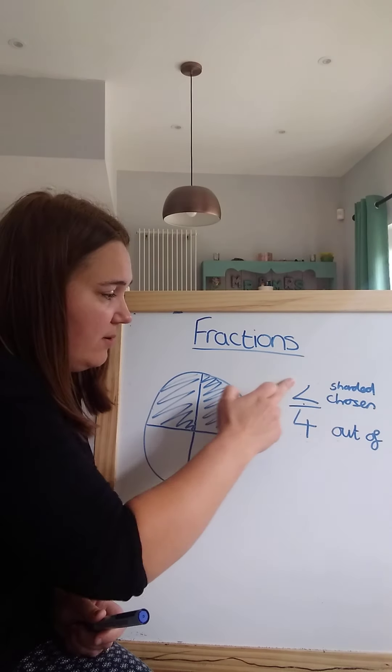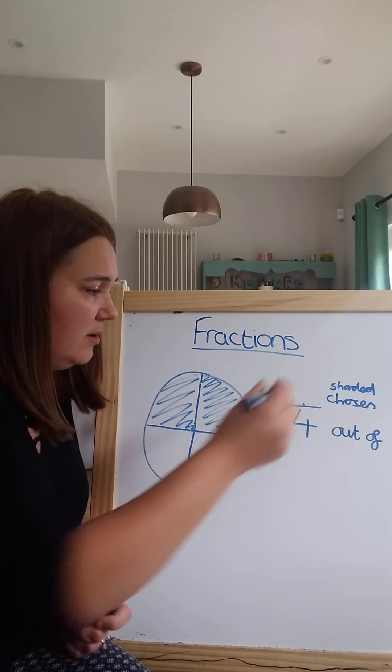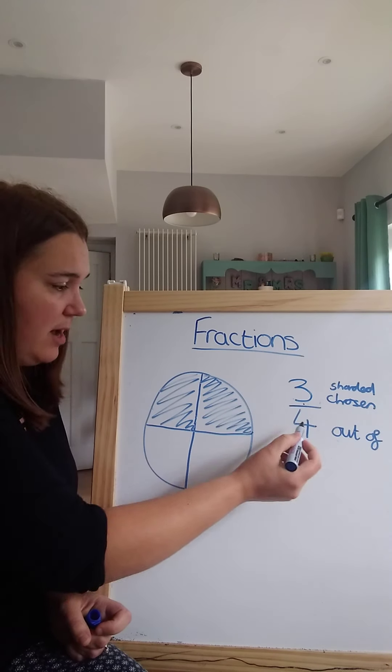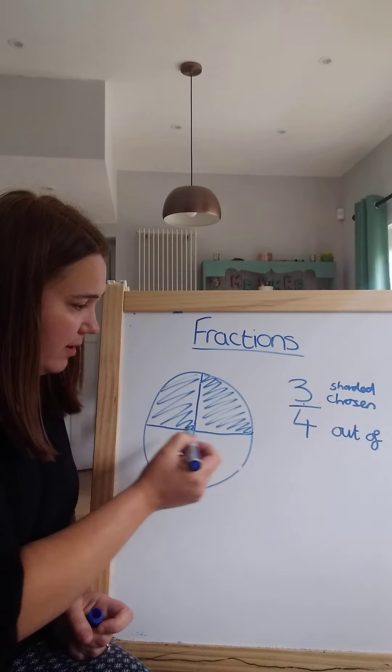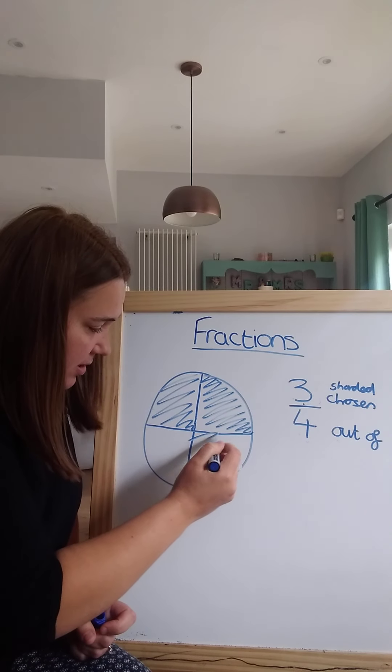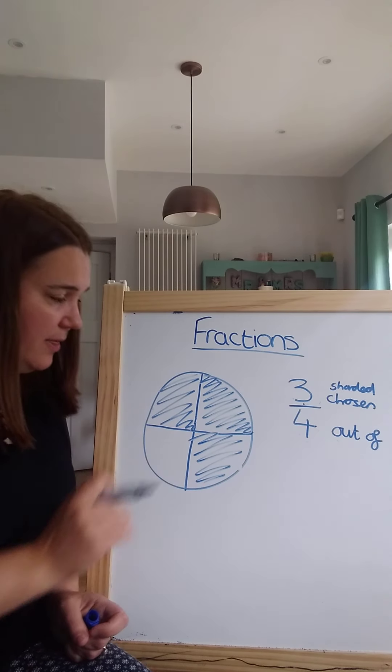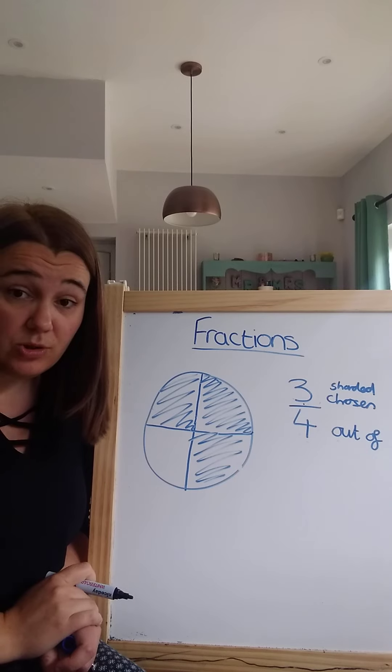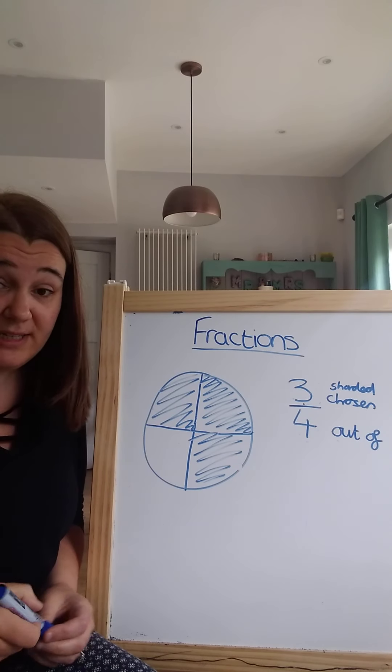Okay, I can also change this again. So I've got four pieces, one, two, three, four. Three of those pieces are shaded, and that shows three quarters. Three out of my four pieces are shaded.